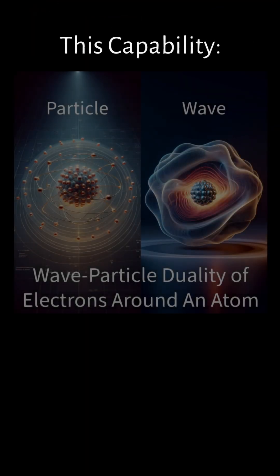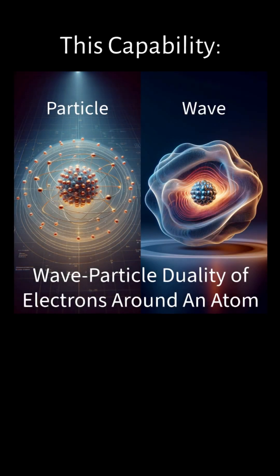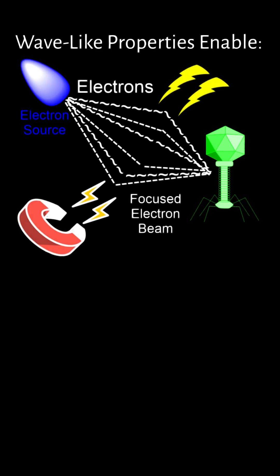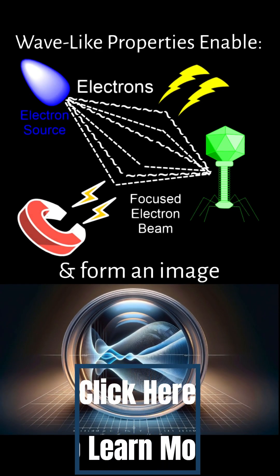This capability is due to the quantum mechanic principle of wave-particle duality, as introduced by Louis de Broglie, that moving matter, like electrons, have wave-like properties. Because of their wave-like properties, electrons can be focused using magnetic and electric fields to form an image, much like light waves can be focused with lenses.